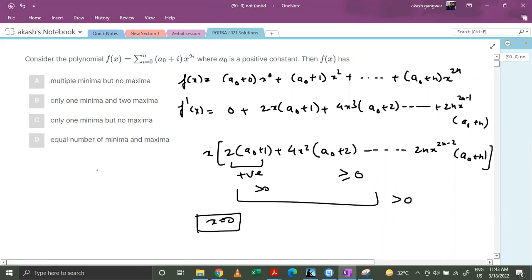So now let us look at the behavior of this function at x equals 0. We can see that at x equals 0, f(x) equals a₀. a₀ is a positive constant and rest of the terms are 0. Only this constant remains.